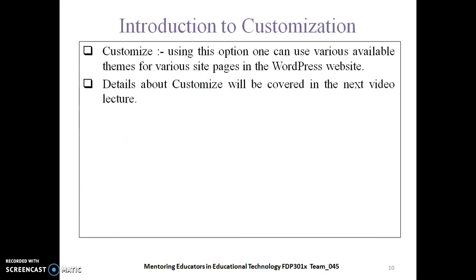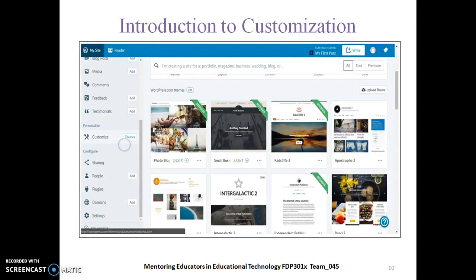Now let us see how to customize. Customization is about adding various themes to your WordPress site. We will continue with customization in the next lecture. Here you can see the Customize option, and by clicking on Theme you can see various themes which are both paid and free.